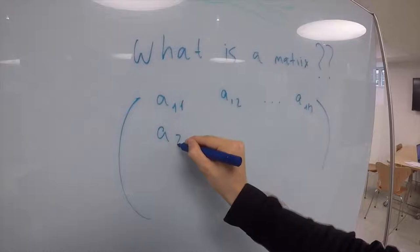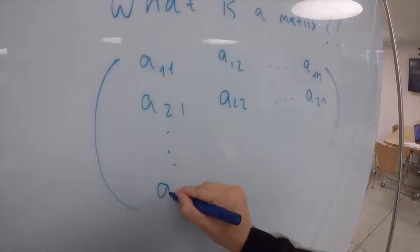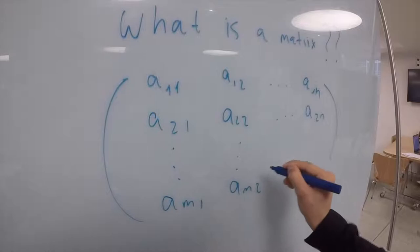The figure shows an m times n matrix of m rows and n columns. Matrices are used to describe linear equations, keep track of the coefficients of linear transformations, and to record data that depends on multiple parameters.